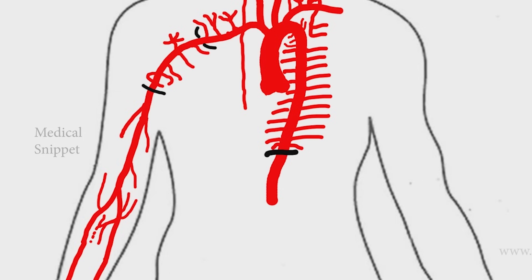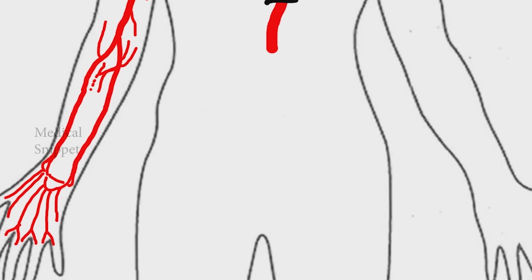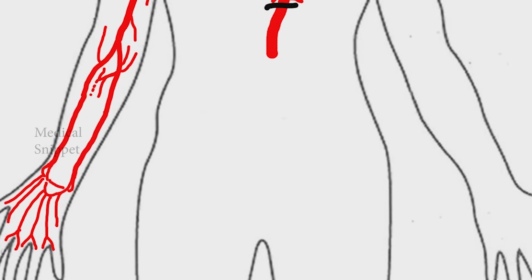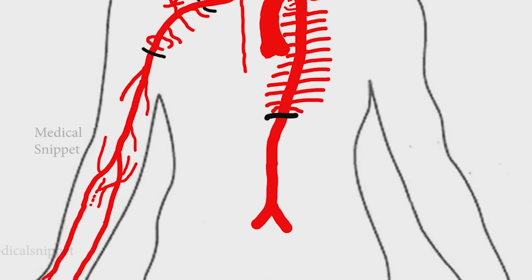Let's see the abdominal aortic branches. The abdominal aorta is a continuation of the descending thoracic aorta from the aortic hiatus. It extends till the bifurcation into the common iliac arteries. First we will see the five paired lateral abdominal wall branches: the inferior phrenic artery and four lumbar arteries.